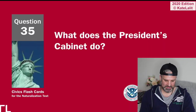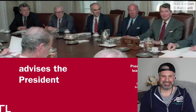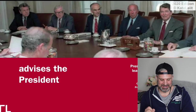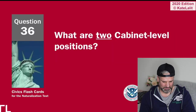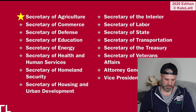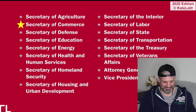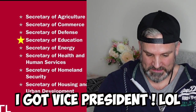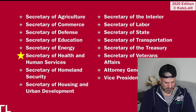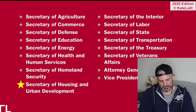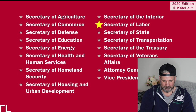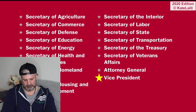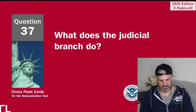What does the president's cabinet do? They advise him — they're his advisors. Advises the president. What are two cabinet level positions? President and vice president... Secretary of Agriculture, Secretary of Commerce, Secretary of Defense, Secretary of Education, Vice President, Attorney General.